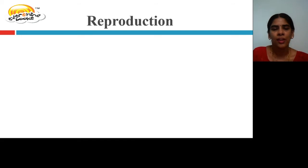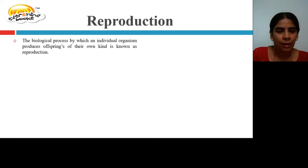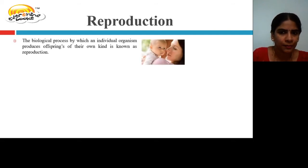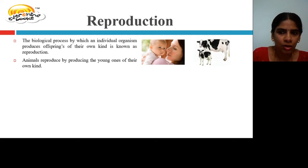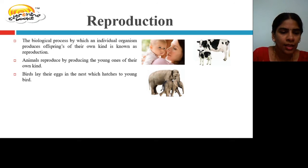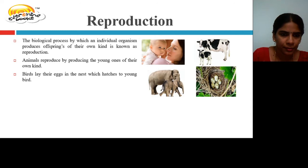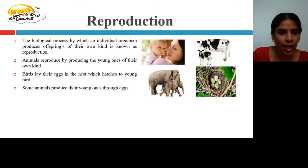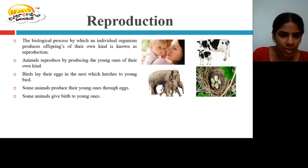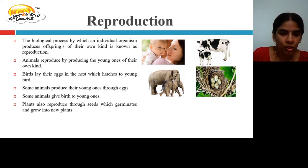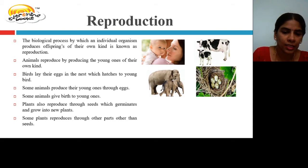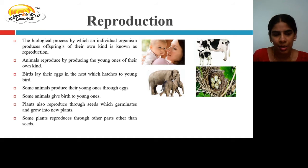Reproduction. Reproduction is a biological process by which an individual organism produces offspring of their own kind. Animals reproduce by producing young ones: a cow produces a young cow, an elephant produces a young elephant. Birds lay eggs in a nest which hatch into young birds. Some animals give birth to young ones, while others produce eggs. Plants also reproduce through seeds which germinate and grow into new plants, and some plants reproduce through other parts such as leaf and stem.